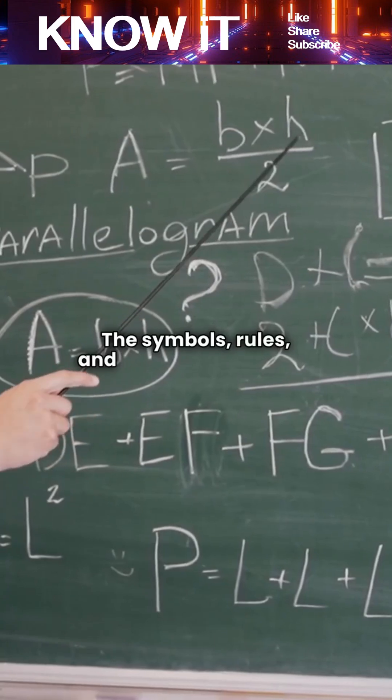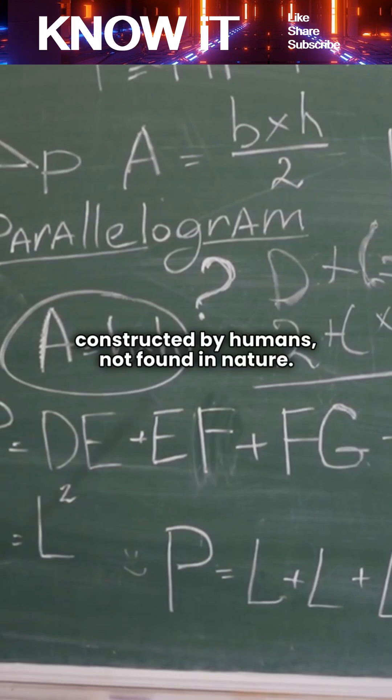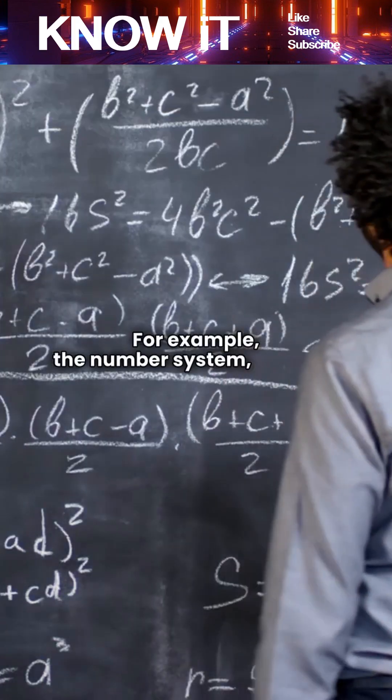The symbols, rules, and systems we use are constructed by humans, not found in nature. For example, the number system, algebra, calculus, and geometry were all developed over time to meet practical needs.